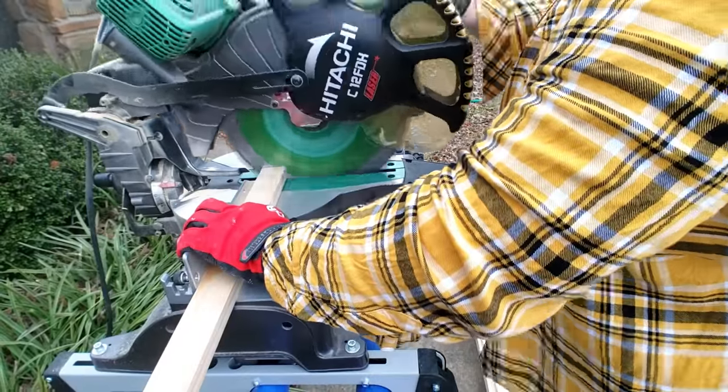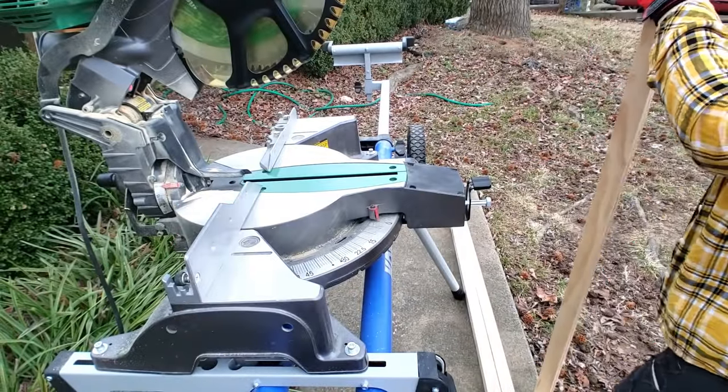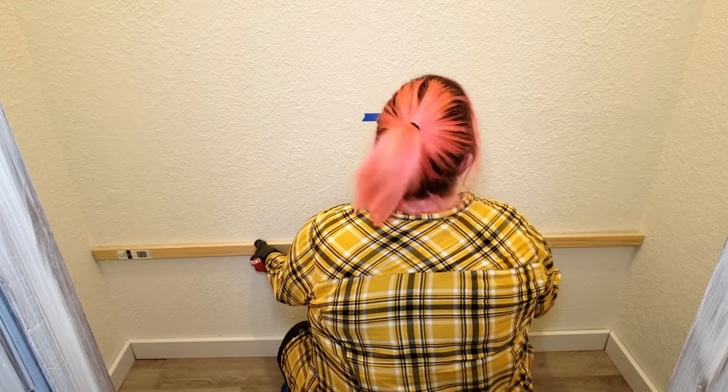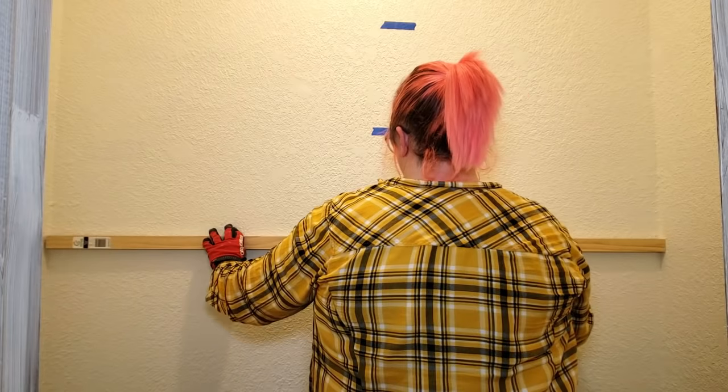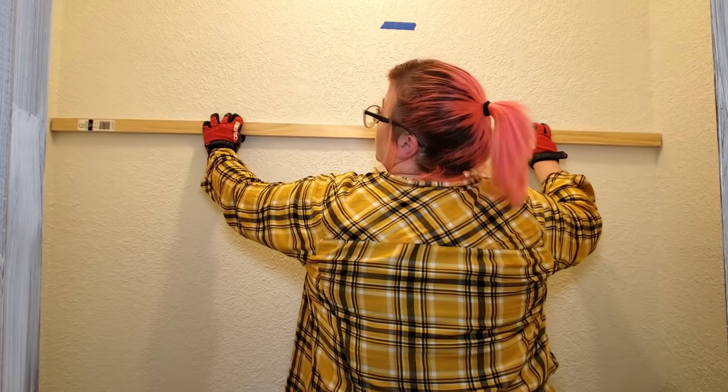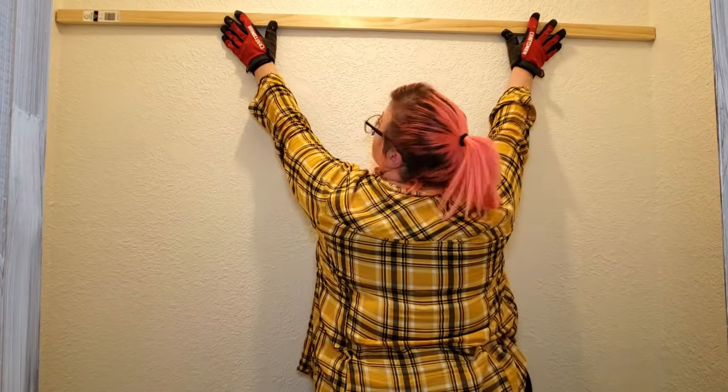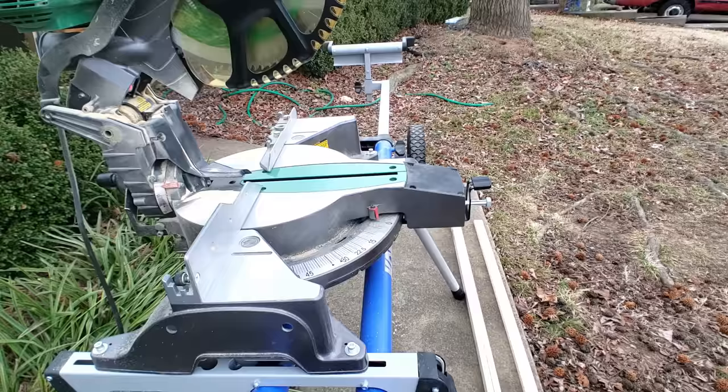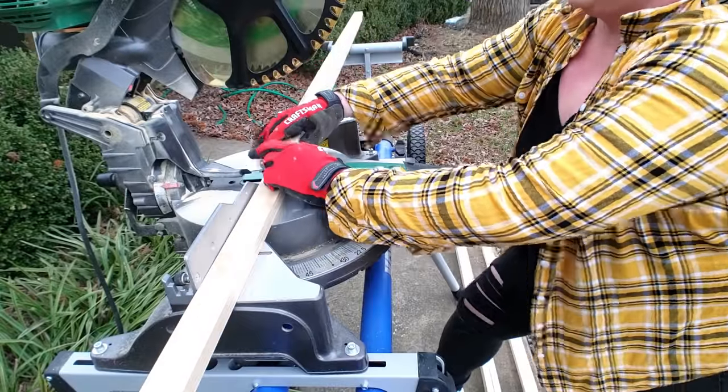Using my miter saw, I cut the cleats for the back wall. When you cut the cleats, it's always a good idea to take the first one inside and make sure that it fits where you need it to go before using that one as a guide to cut the rest of them.